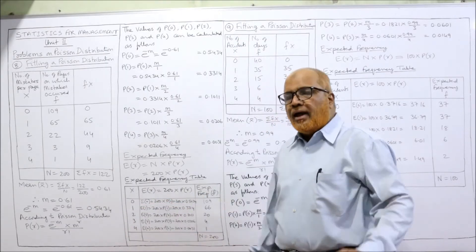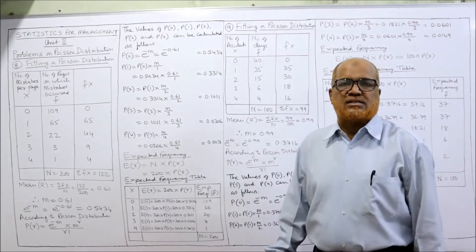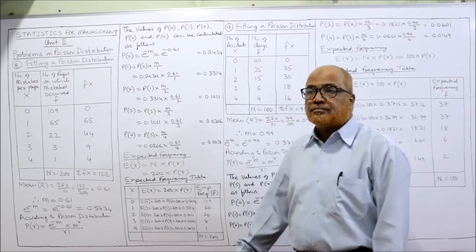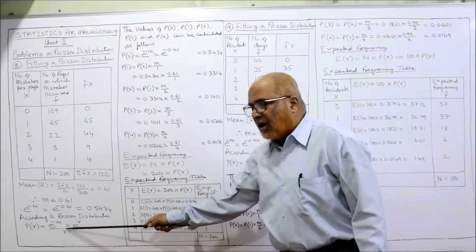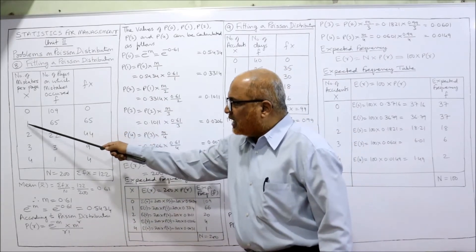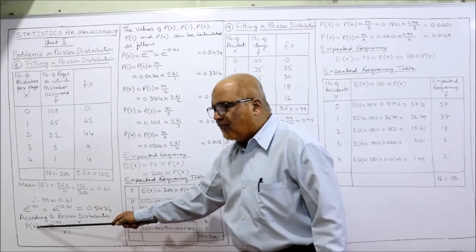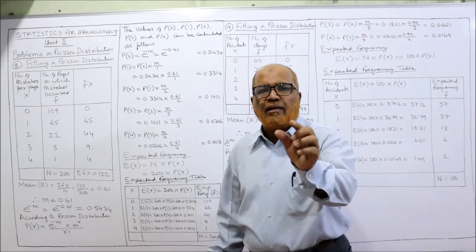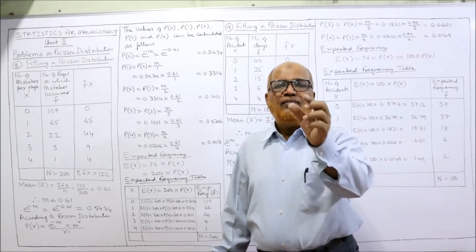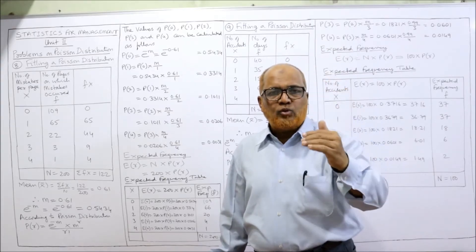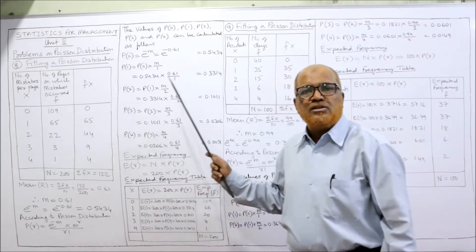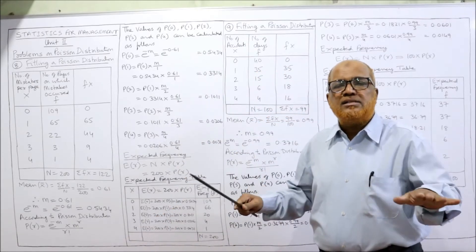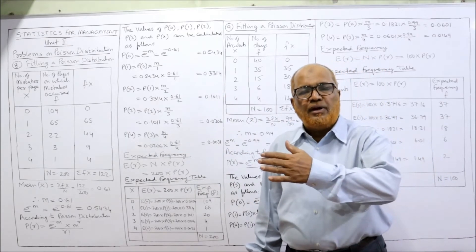According to the Poisson distribution law, the probability of R successes P(R) equals e to the power of minus M, multiplied by M to the power of R, divided by R factorial. A shortcut method can be applied when we want probabilities in sequence — P(0), P(1), P(2), P(3), P(4). Whether you substitute into the formula or apply the shortcut, you get the same answer. The shortcut applies only when probabilities are needed in sequence.